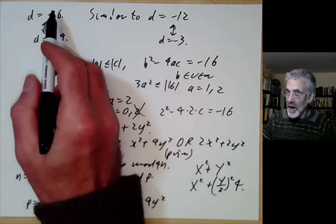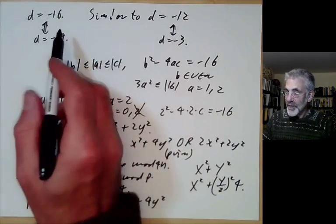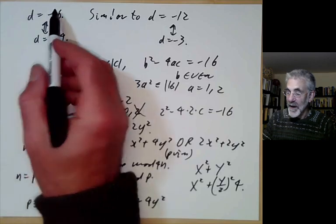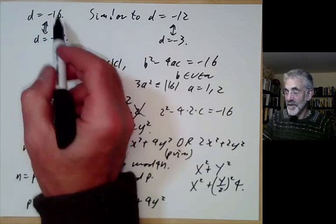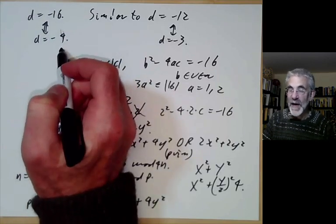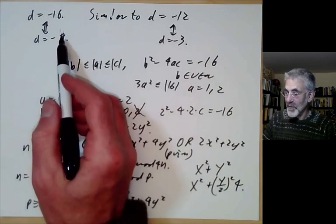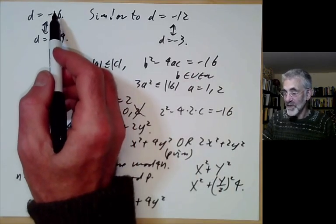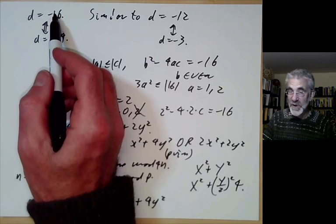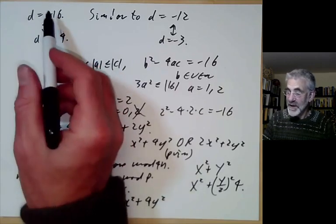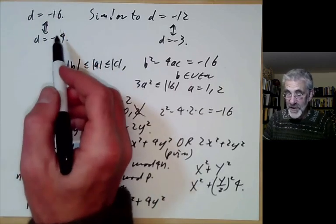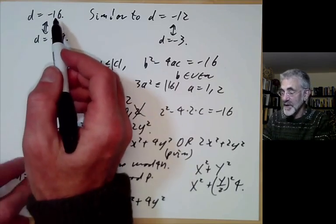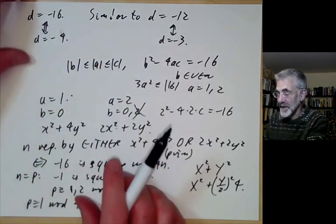In general, whenever you multiply a discriminant by a square, the forms of those two discriminants tend to be related. So discriminant -4 is related to discriminant -4 × 2² = -16, and also to -4 × 3² = -36, and so on.